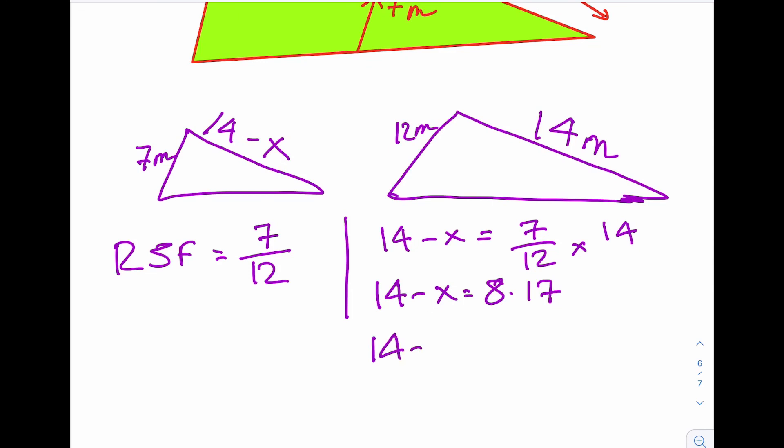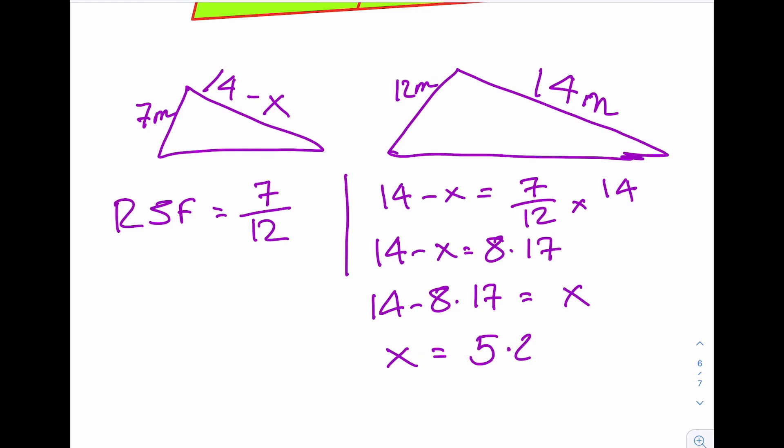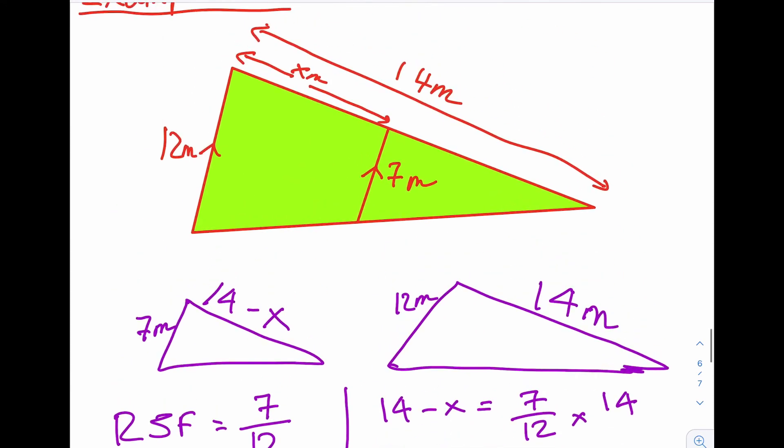We now know 14 minus X equals 8.17. So a little bit of algebra to solve here. 14 minus 8.17 must equal X. So X equals 5.83 meters and we've answered the question.